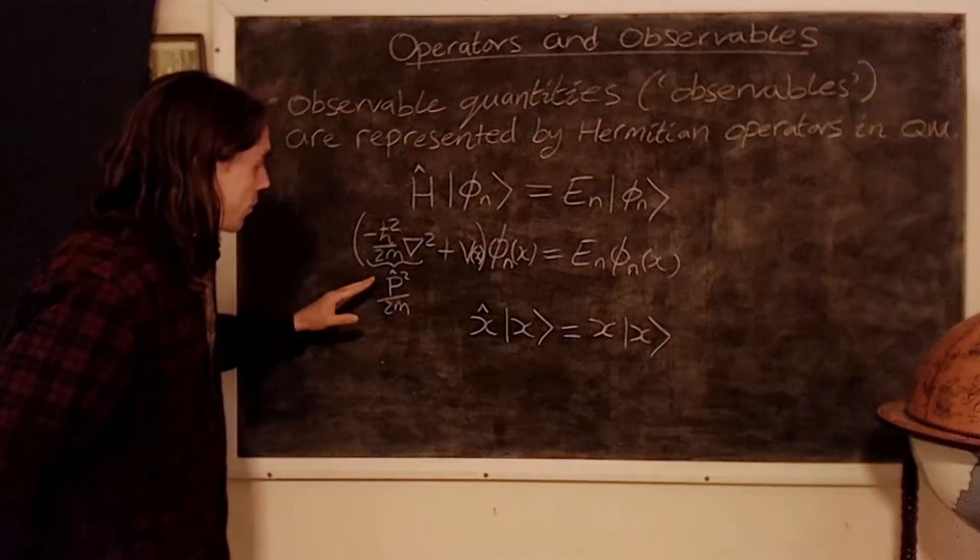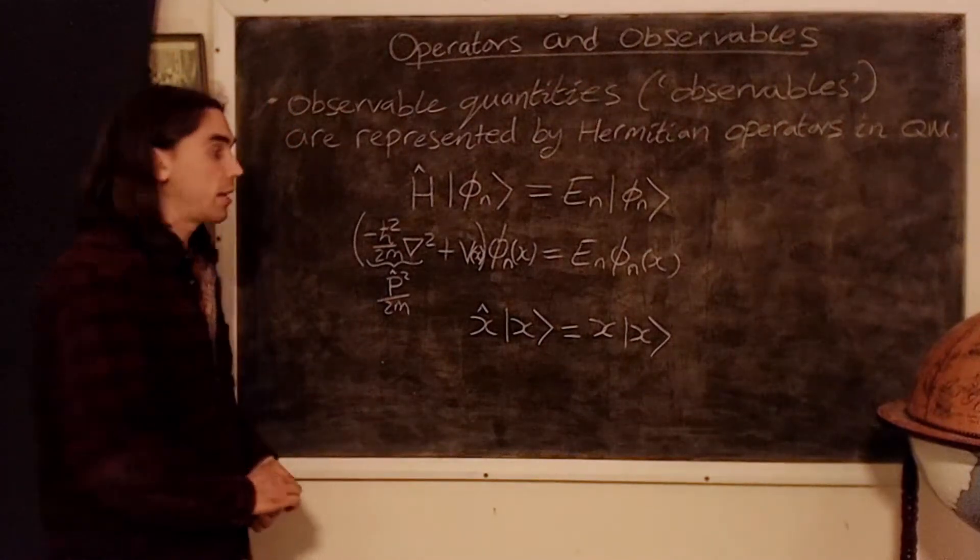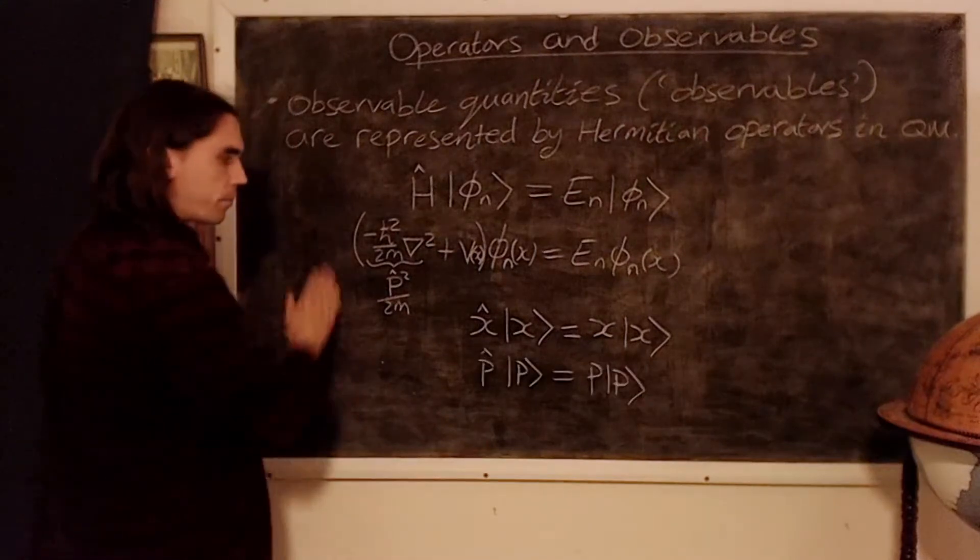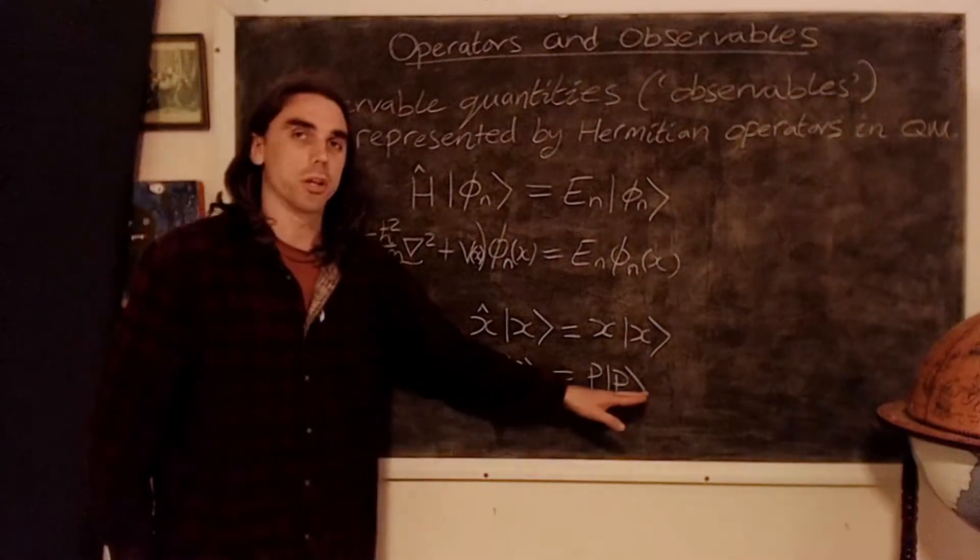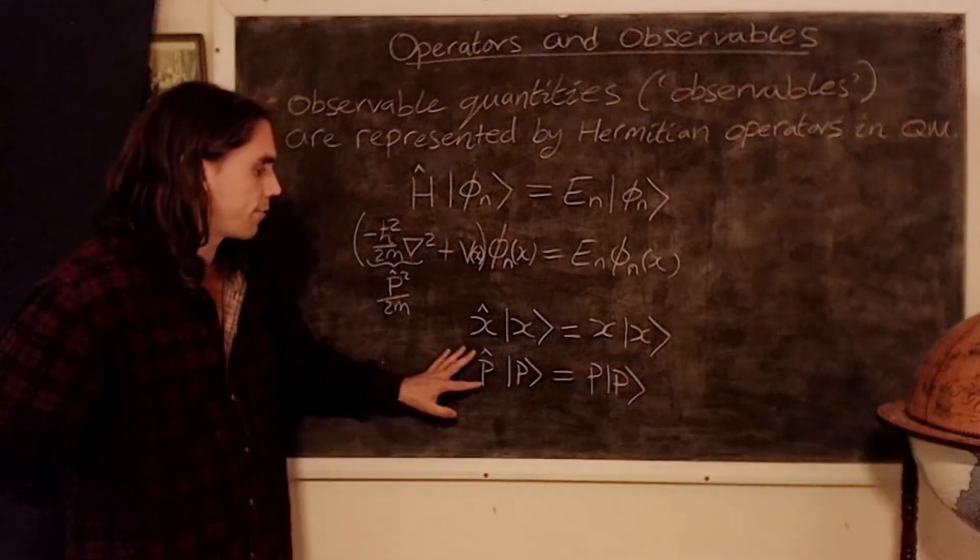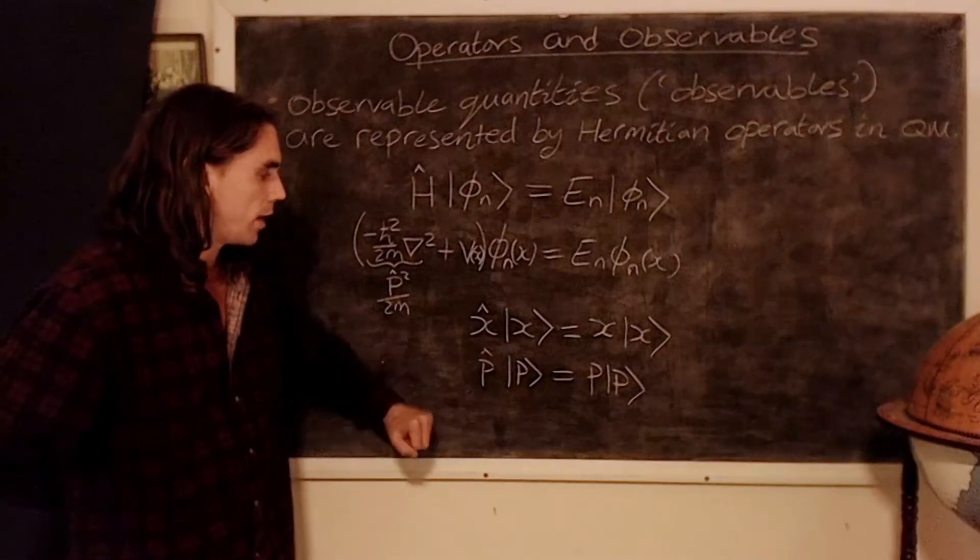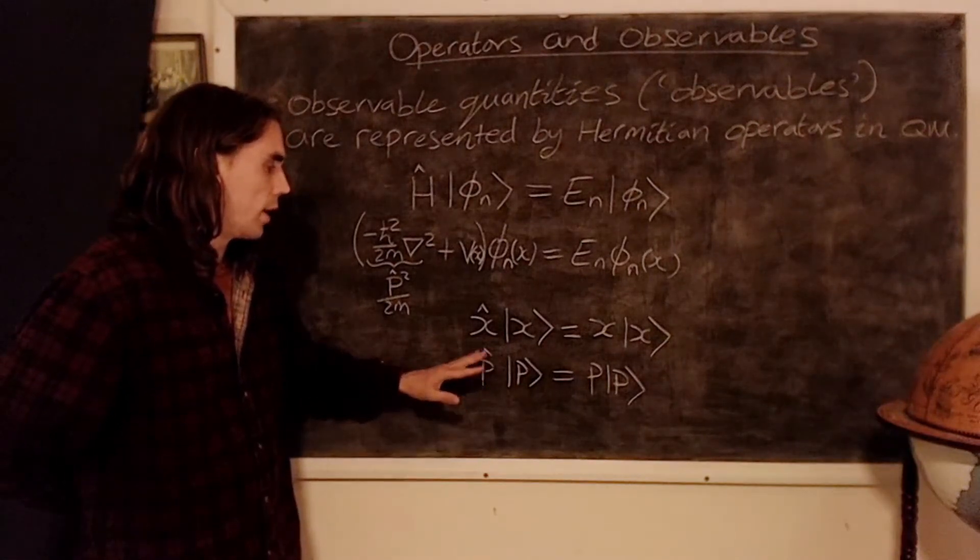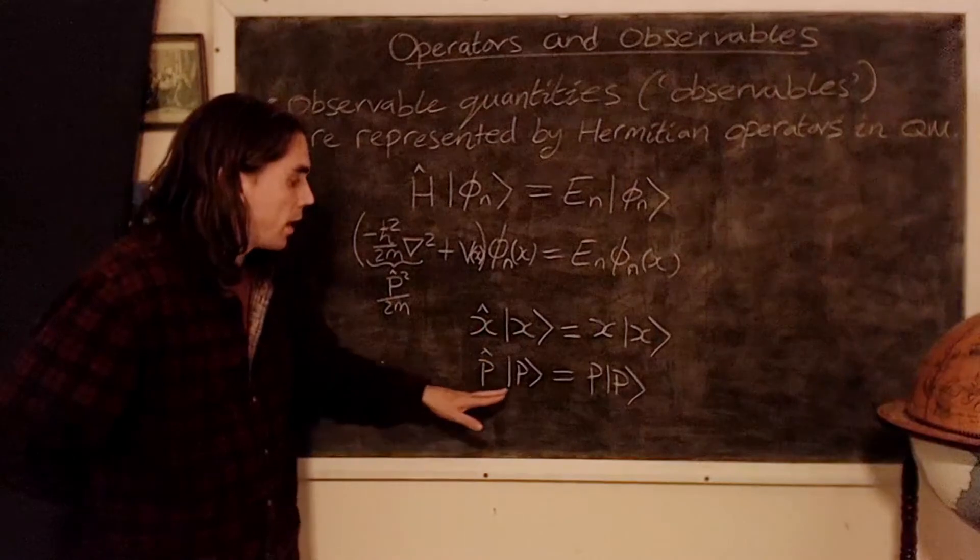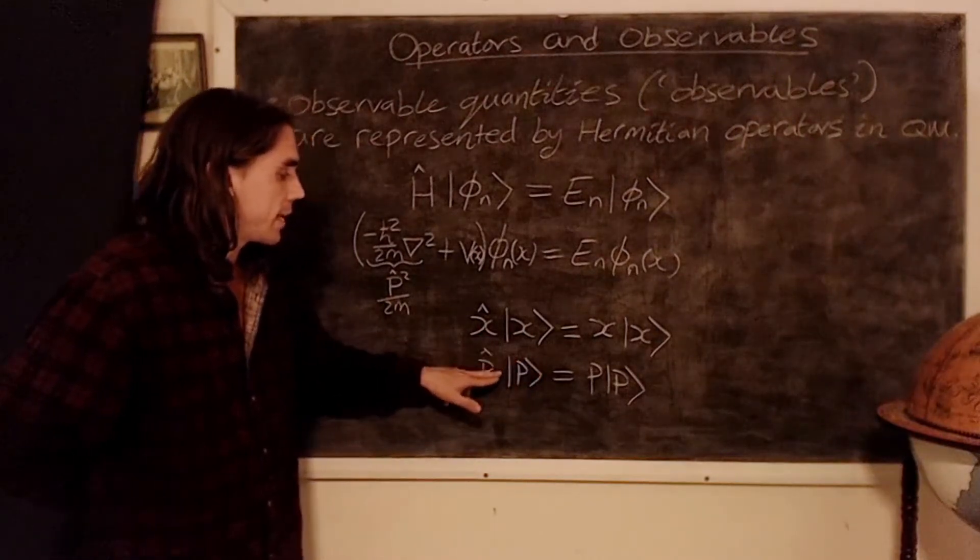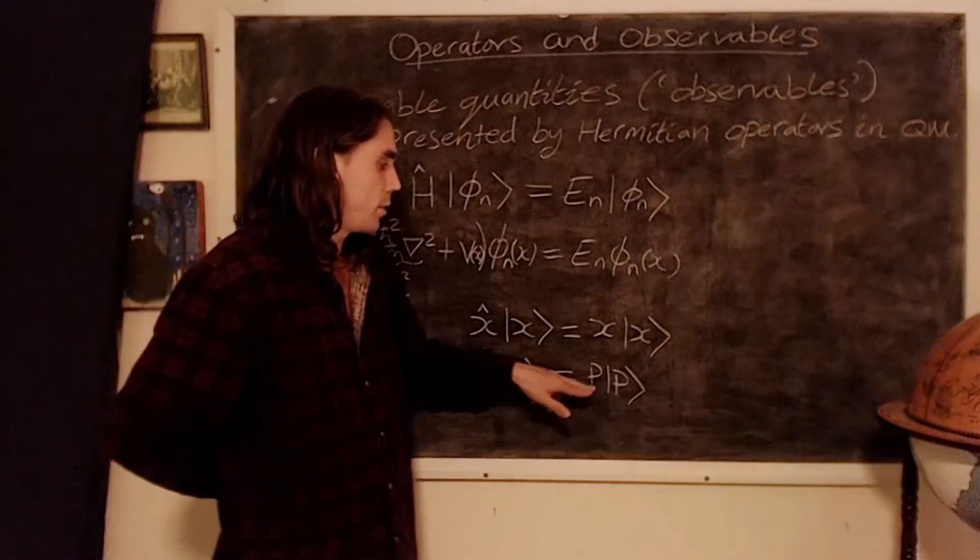But also I'm saying that we should have this other operator, p, and so we deduce that must obey the following equation. It looks similarly tautological, but bear in mind again that these are different things. This is an operator, either a matrix or a differential operator. This is an eigenstate of that operator, and this is an eigenvalue, which is just a real number.